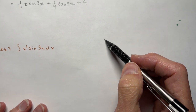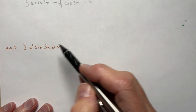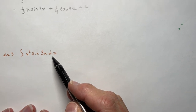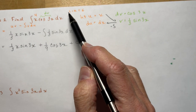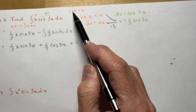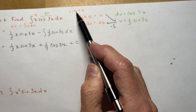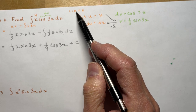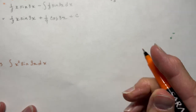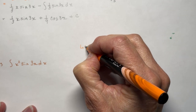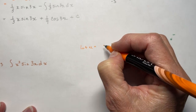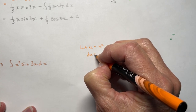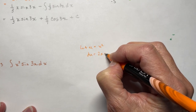Example three: this time I have x²·sin(3x)dx. Again, using our LIATE rule — I don't have any logs, I don't have any inverse trigs. I have an algebraic term — that's my x² — and then trig. So I pick the x² to be u. Let u equal x².